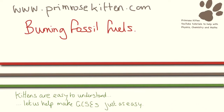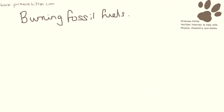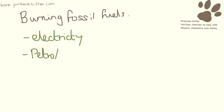Our society is very, very dependent on burning fossil fuels, but it has wide-reaching and long-lasting consequences. We burn fossil fuels to do lots and lots of different things. We burn fossil fuels to make electricity. Petrol and diesel are fossil fuels, and obviously we have those in our cars, our buses, our trains, our transport systems.